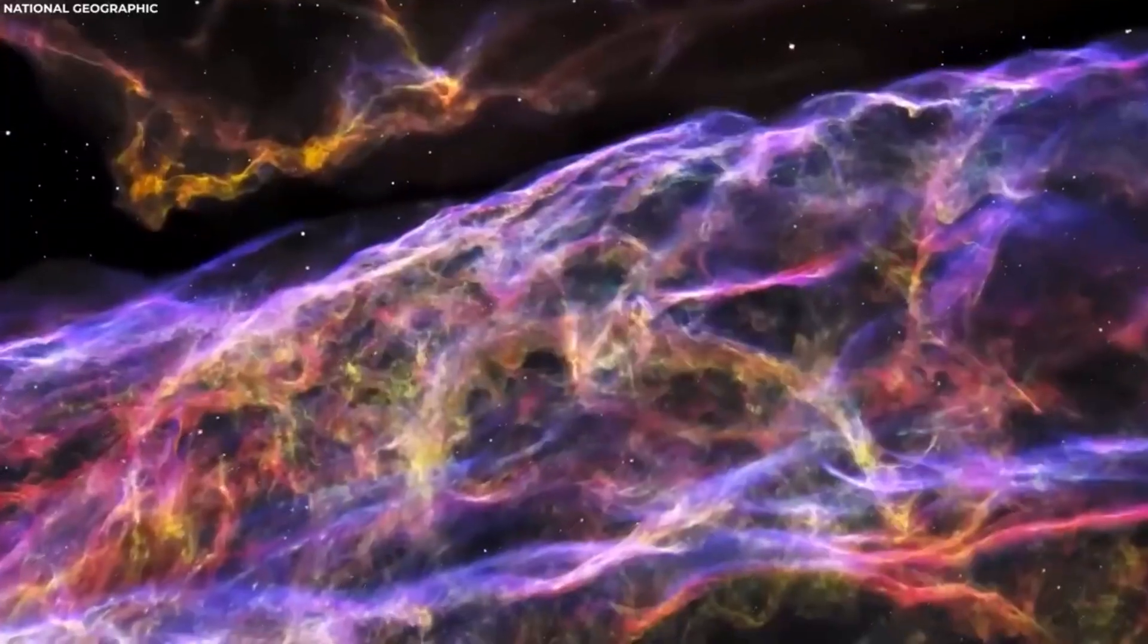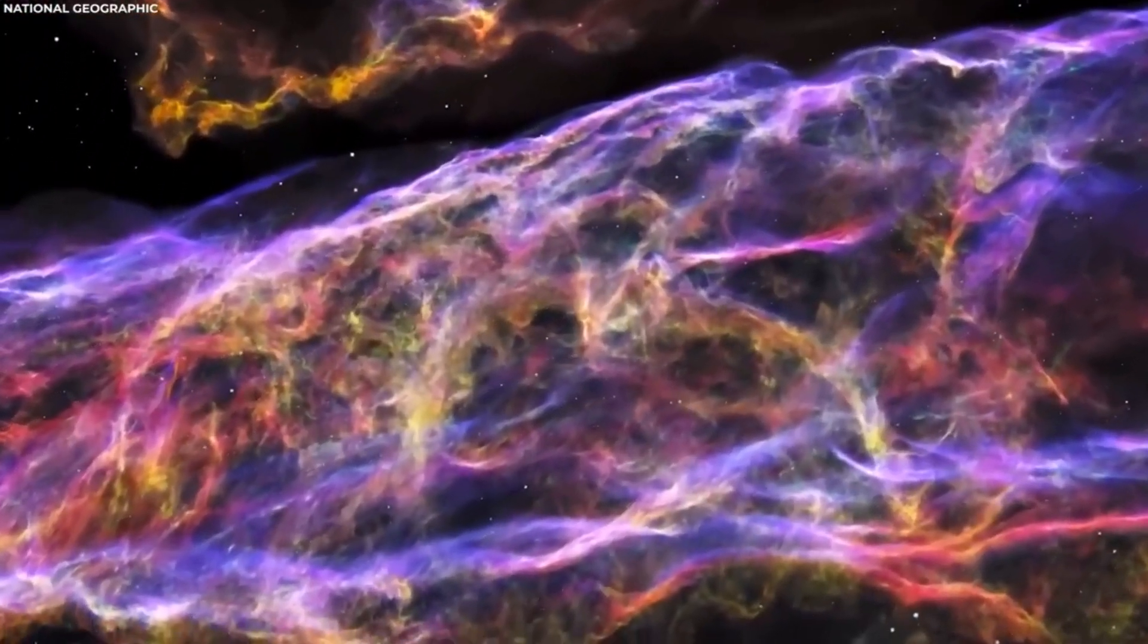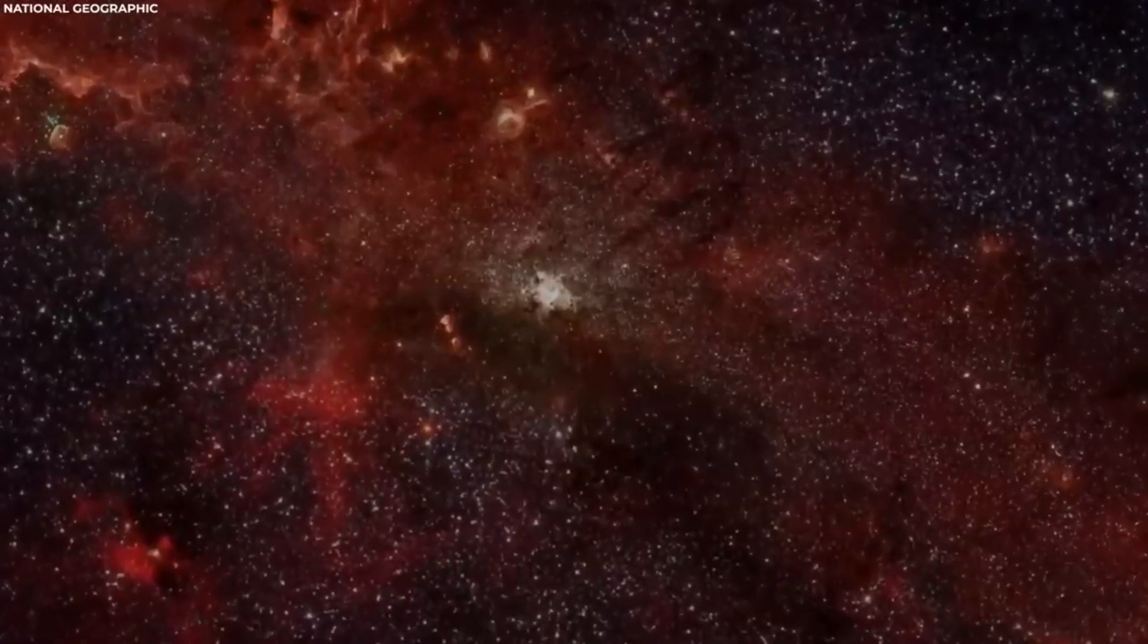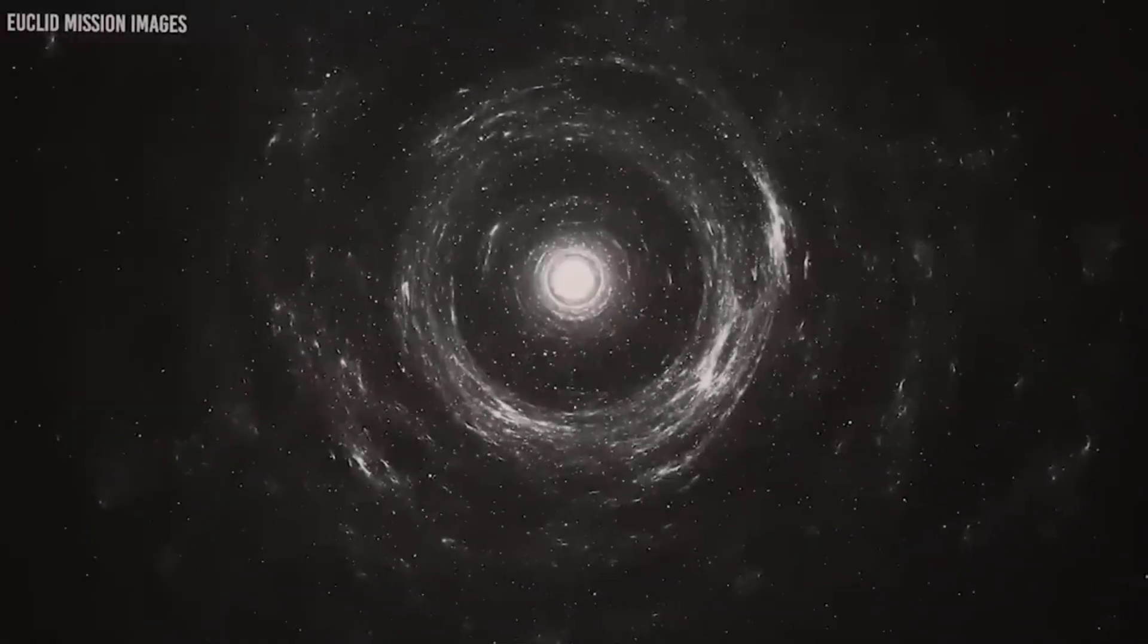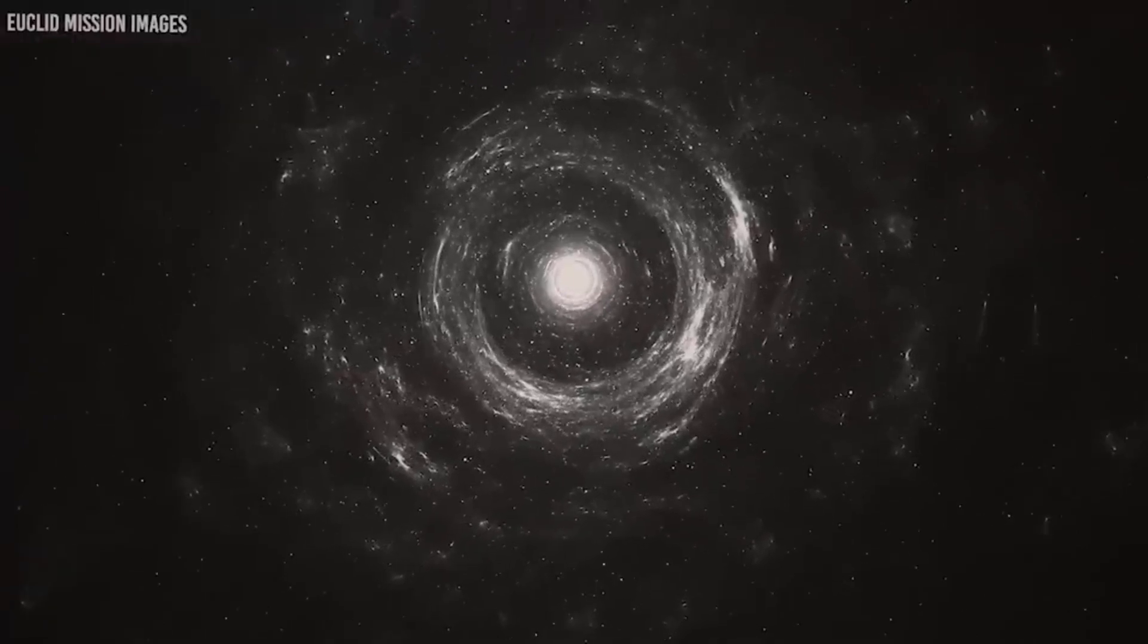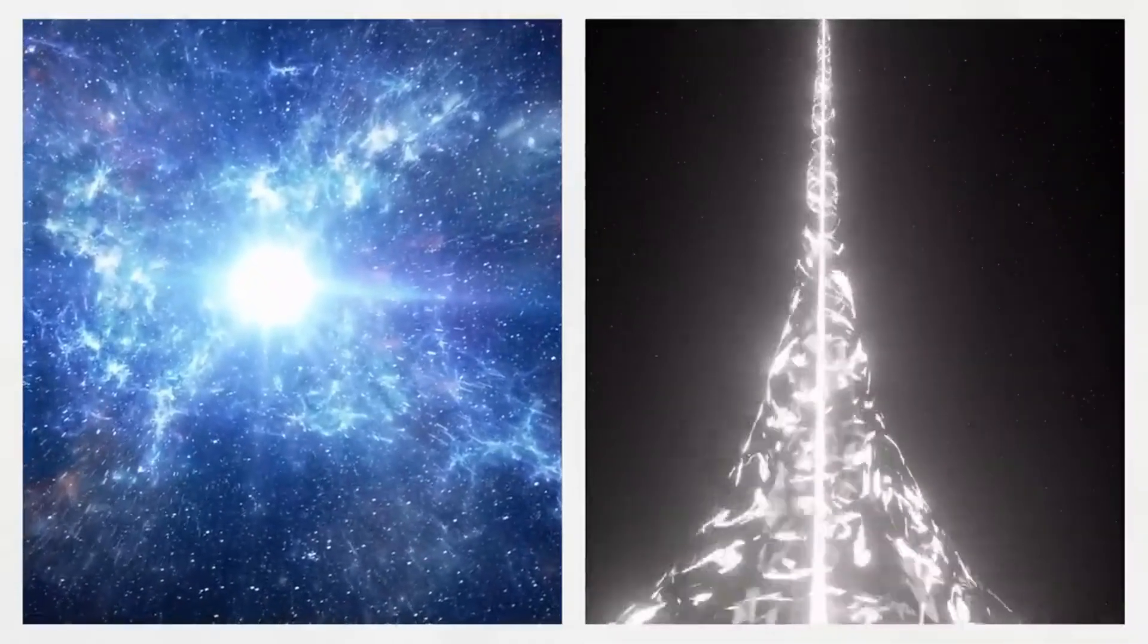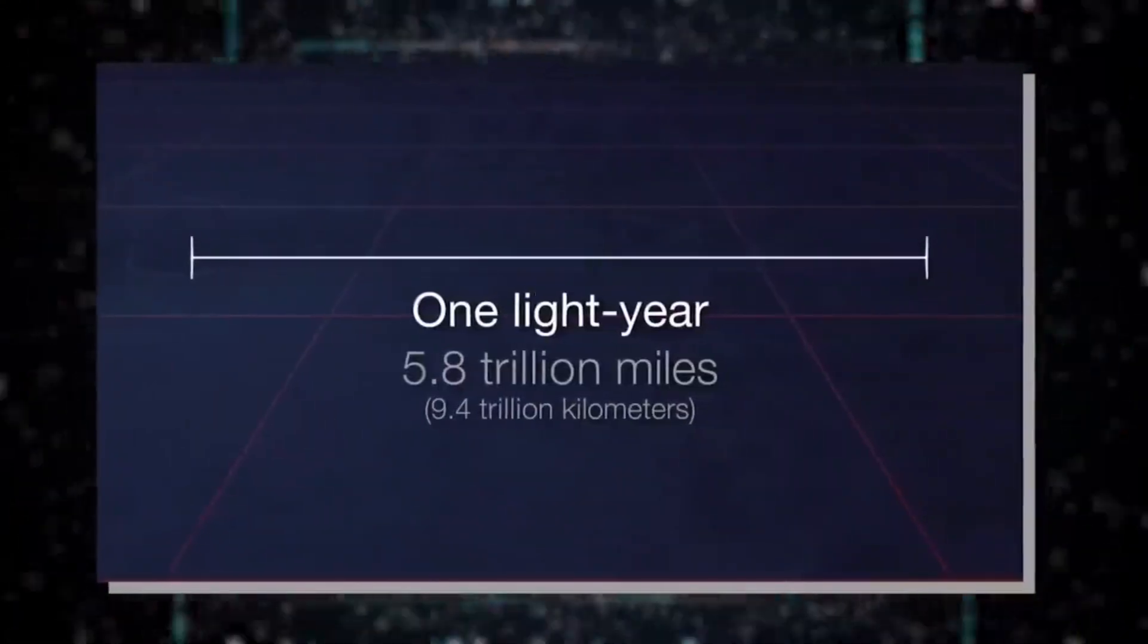The second reason is the universe's expansion. Imagine dots on the surface of an inflating balloon. As the balloon expands, the dots move away from each other. The same principle applies to the universe, where galaxies are drifting apart as space itself stretches. This expansion causes the light from distant objects to become stretched too, shifting towards longer wavelengths, which we perceive as redshift. Eventually, some objects will move beyond our observational reach as they recede beyond a certain distance.